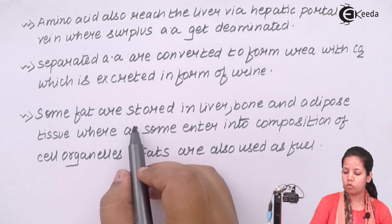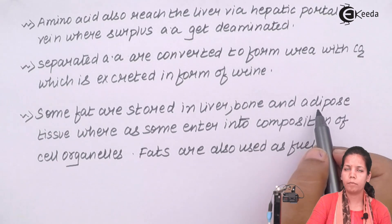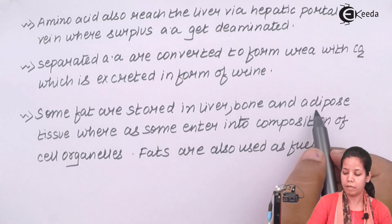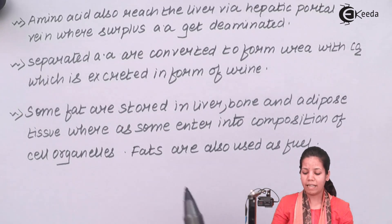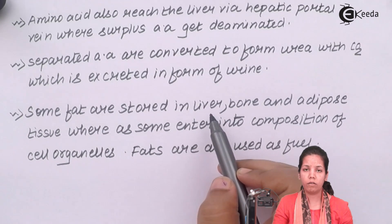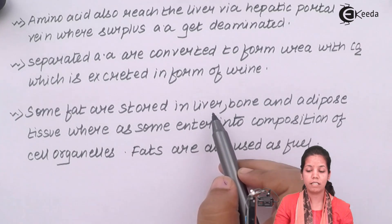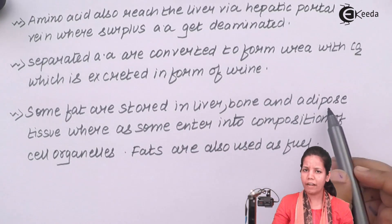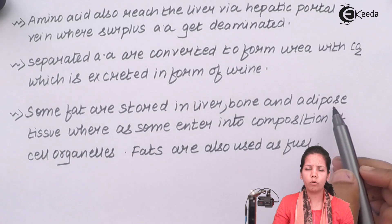Some fats are stored in the liver, bones, and adipose tissues — which include regions like the thighs and buttocks. The fats stored inside the liver could be saturated or unsaturated fatty acids. Adipose tissues also store extra amounts of fat. We know that 1 gram of fat gives 9 calories, which is a significant amount.